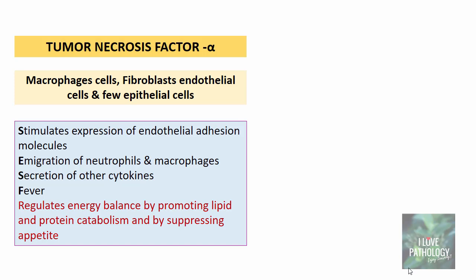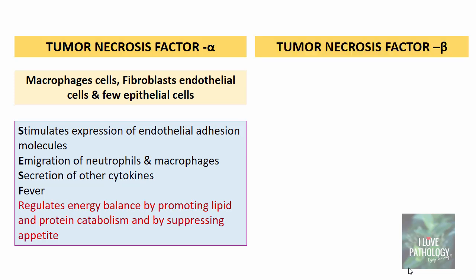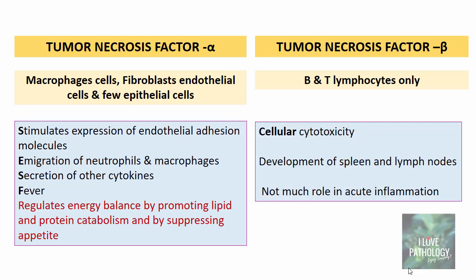TNF-beta is a cytokine produced by B and T lymphocytes only. Its functions are more related to cellular cytotoxicity and it is very important in the development of the spleen and lymph nodes, but does not have much role in acute inflammation.